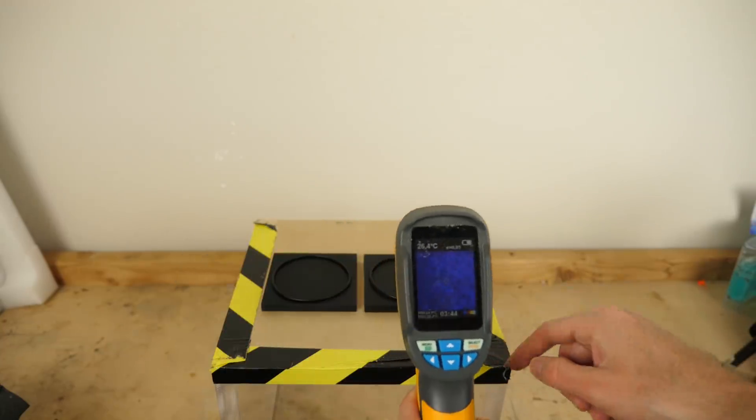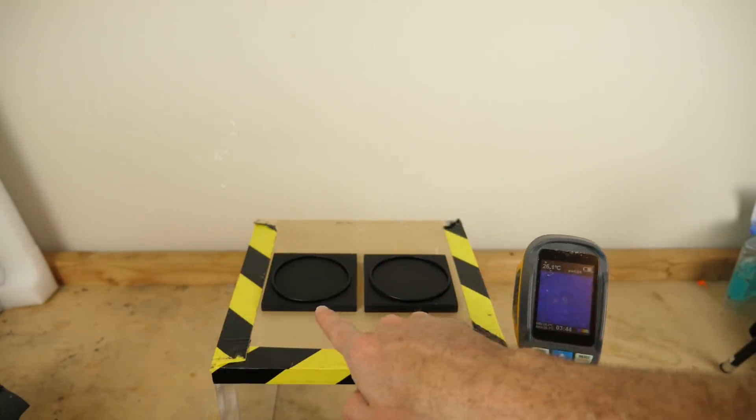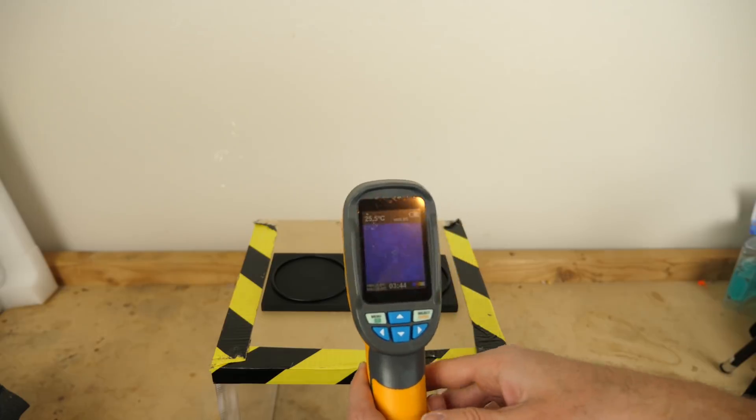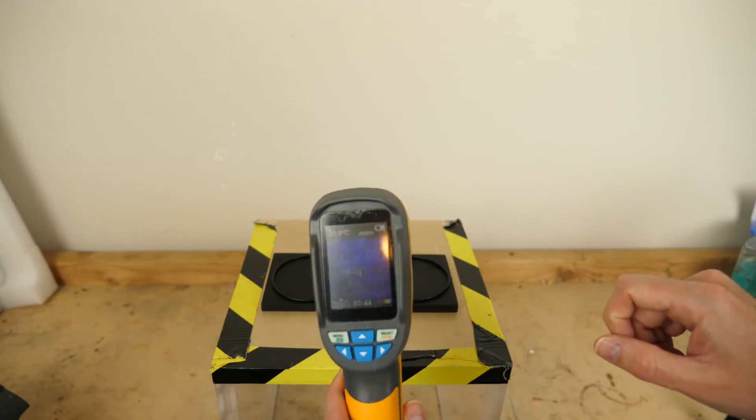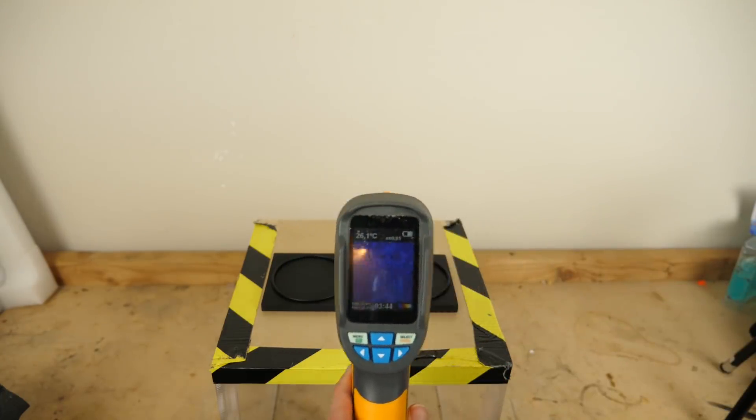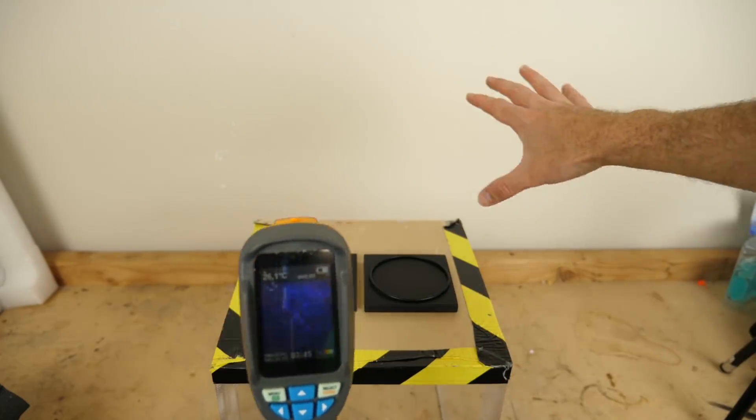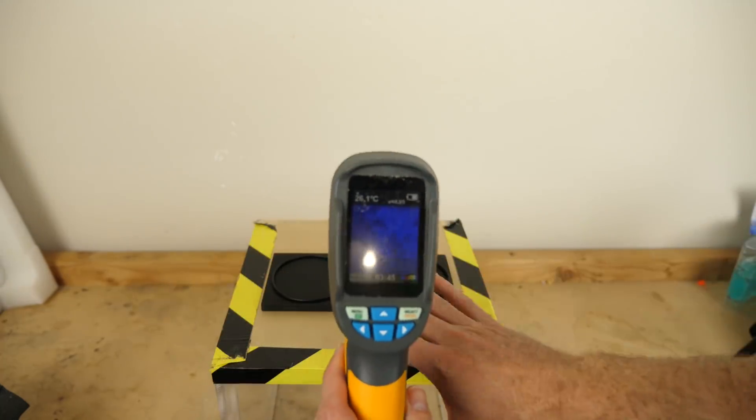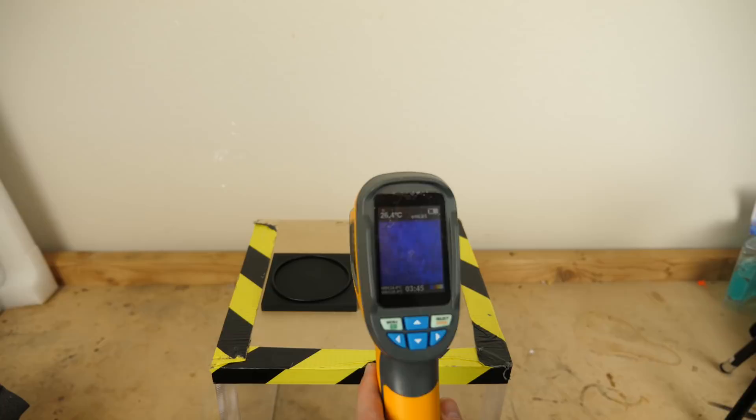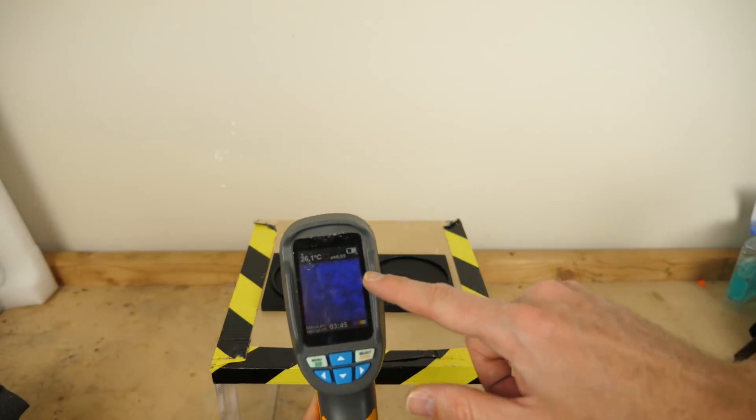Okay, so I have two black plates here. Both of these are at the exact same temperature. I'll prove it here by showing you a thermal imager. So you can see that it just shows a straight blue. It means that the background, these plates, everything is at the same temperature, which right now is at 26 degrees Celsius.